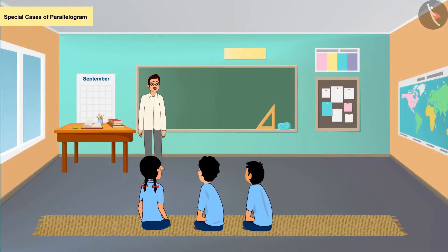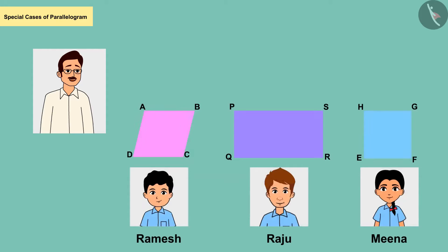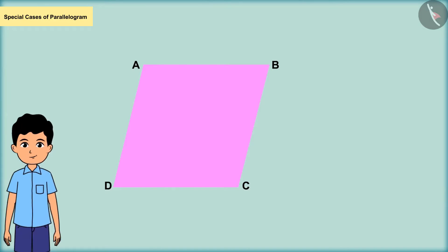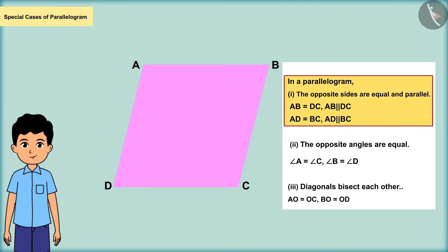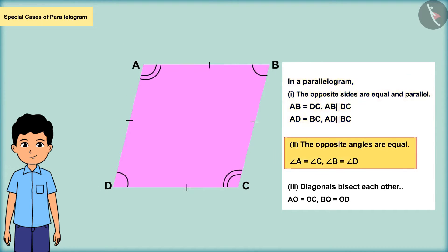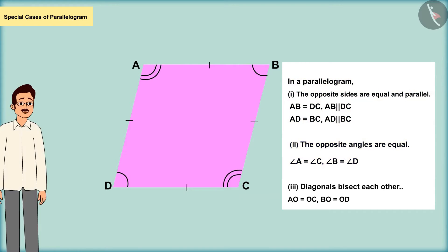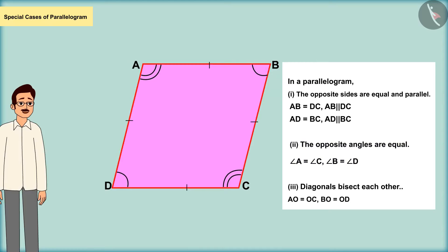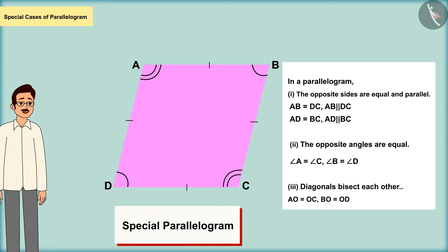Ramesh made a parallelogram with all four sides of equal measure, with opposite angles also equal. All the sides of this parallelogram are equal. Therefore, we can call it a special parallelogram — it is a rhombus.